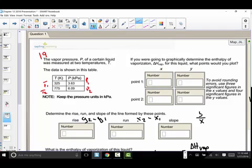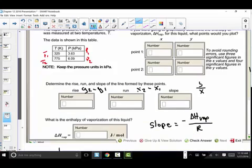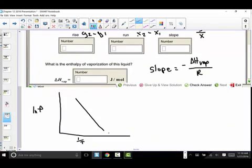We're going to graphically determine the enthalpy of heat of vaporization. What points would you use? So understanding a little bit about the graph associated with our equation.